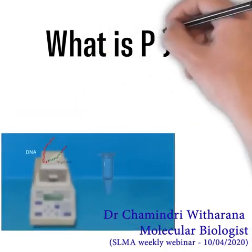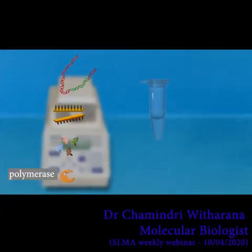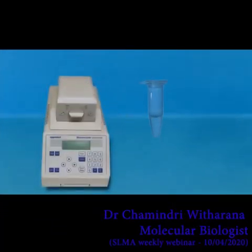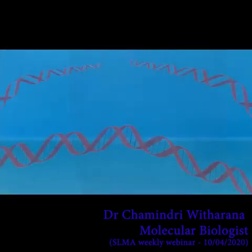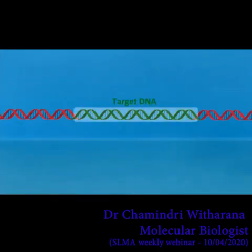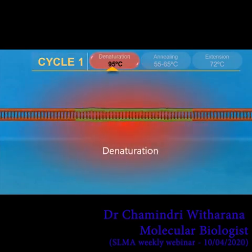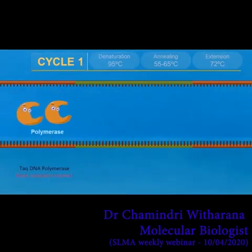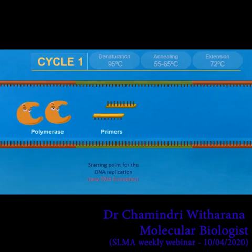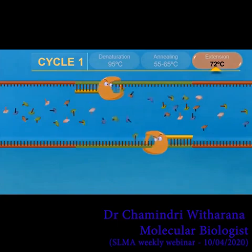PCR stands for polymerase chain reaction. This is a method used widely in molecular biology to make millions to billions of copies of a specific DNA. This allows us to take a very small sample of DNA and amplify it to a large amount.